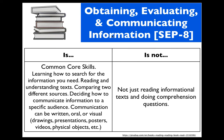The last SEP has three components: obtaining, evaluating, and communicating information. This is essentially a huge part of the Common Core ELA skills all rolled up into one SEP. It's about learning how to search for information you need, reading and understanding texts, comparing different sources, and deciding how to communicate to a specific audience. A communication can be written, oral, or visual — visual communication includes drawings, presentations, posters, videos, even physical objects. Anything that involves communicating what's inside your head to the rest of the world.